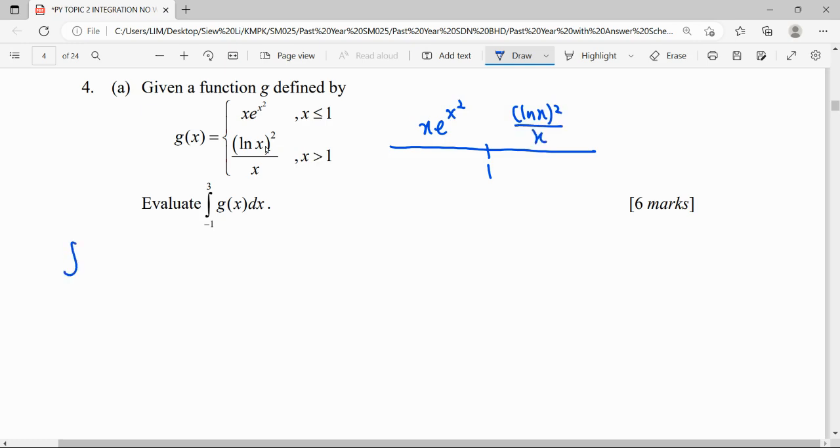So when we want to integrate from negative 1 to 3 for this function, we can see it clearly. Actually, it will start from negative 1 until 1 only, which is for the function x exponential x squared, continue from 1 up to 3. It will be ln x squared over x, with respect to x.